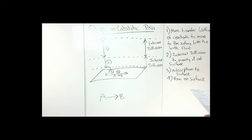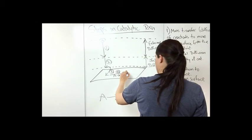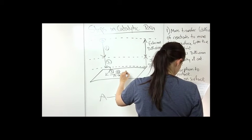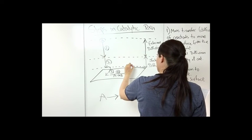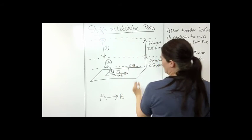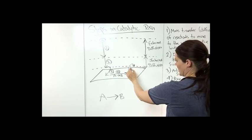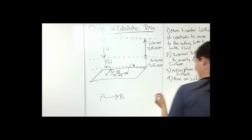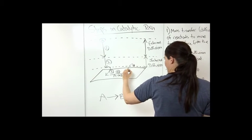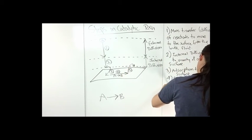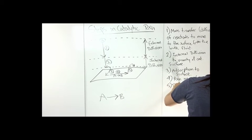And then the next thing that occurs is it needs to desorb from the surface. So B, so this is B now, it's going to desorb from the surface. So it's still in the vicinity of this site, but it's desorbed. So this is step five. Five, desorption from surface.